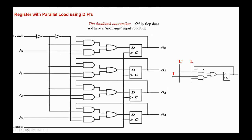This is the circuit diagram for a register with parallel load implemented using D flip-flops. To understand how the register functions, we have one stage here. When load equals zero, we will have zero here, and NOT load equals one. As you see, we have a feedback, so here we have Q(t) at the output of this AND gate, meaning that the flip-flop will remain in its previous state — this is the store condition.